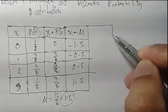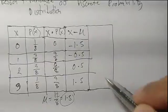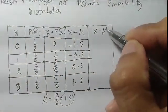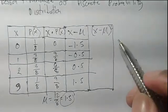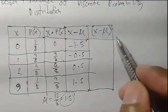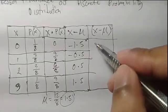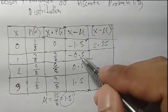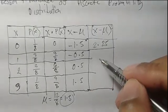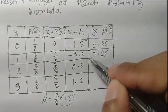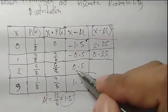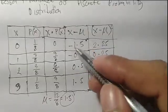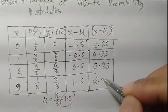The next step is to square the values in that fourth column, labeled x minus mean squared. So: negative 1.5 times negative 1.5 is 2.25; negative 0.5 times negative 0.5 is 0.25; 0.5 times 0.5 is also 0.25; and 1.5 times 1.5 is 2.25.